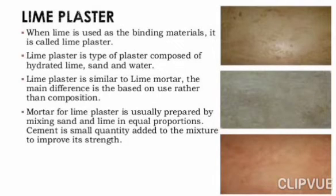Lime plaster: when lime is used as a binding material, it is called lime plaster. Lime plaster is a type of plaster composed of hydrated lime, sand, and water. Lime plaster is similar to lime mortar; the main difference is based on use rather than composition. Mortar for lime plaster is usually prepared by mixing sand and lime in equal proportions. A small quantity of cement is added to the mixture to improve its strength.